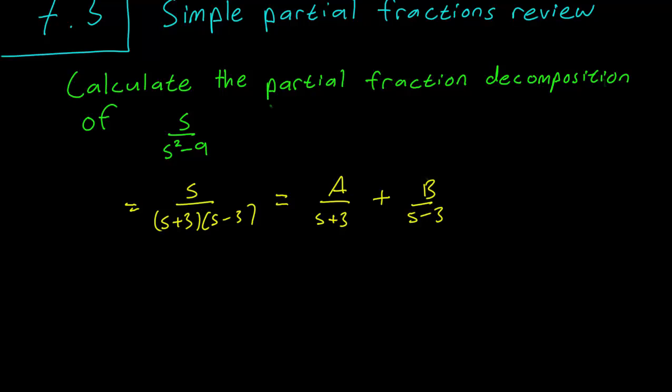We do this by multiplying both sides by the denominator of the fraction on the left. So we multiply both sides by s plus 3, s minus 3. And what we get is s equals a times s minus 3 plus b times s plus 3.